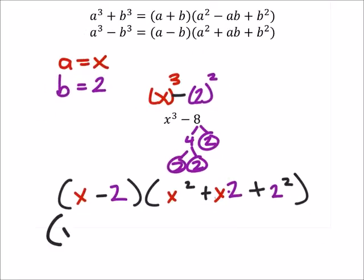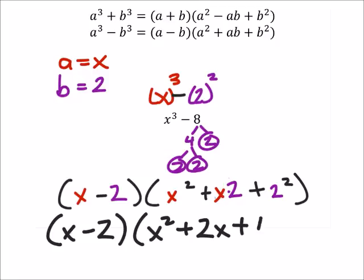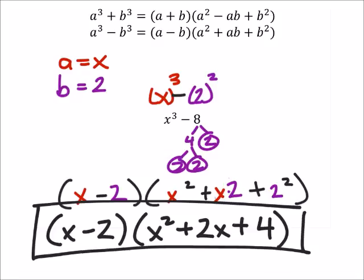This can be simplified just a little bit. We got x minus 2, x squared. We'd want to reorder this just for formality purposes to 2x, and then 2 squared is 4.